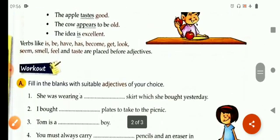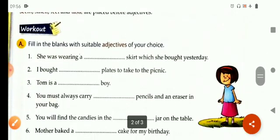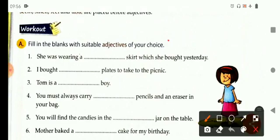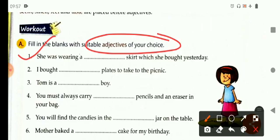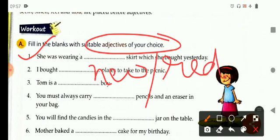Now children, it's time to do some exercise. First one is, fill in the blanks with suitable adjectives of your choice. The first one is, she was wearing a new dress or a red skirt. You can write any adjective of your choice. She is wearing a new skirt which she bought yesterday, or it can be a red skirt that she bought yesterday.